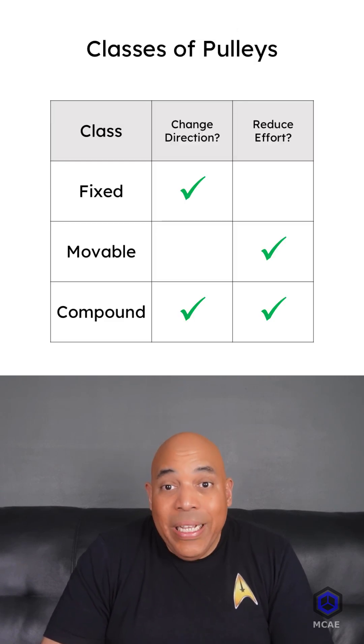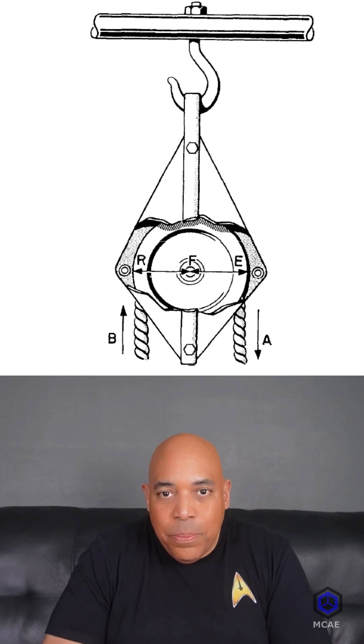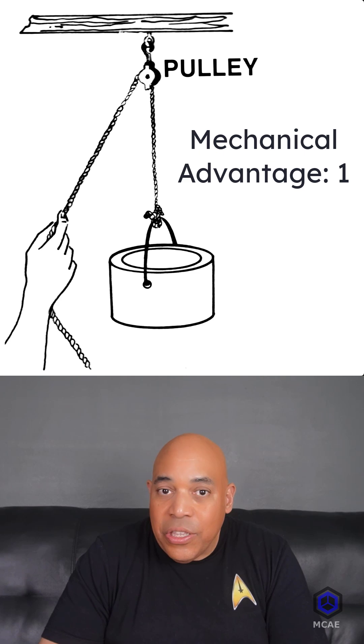There are three classes of pulleys. In a fixed pulley, the wheel is anchored in place. It changes the direction, but not the effort. The mechanical advantage is one.